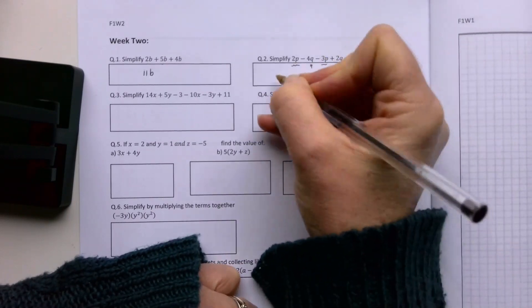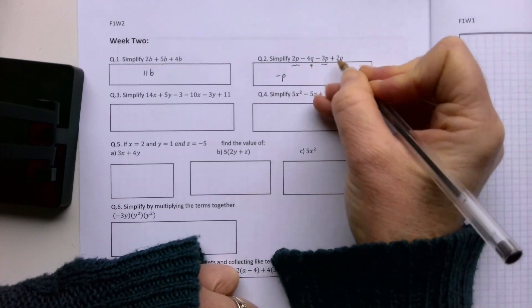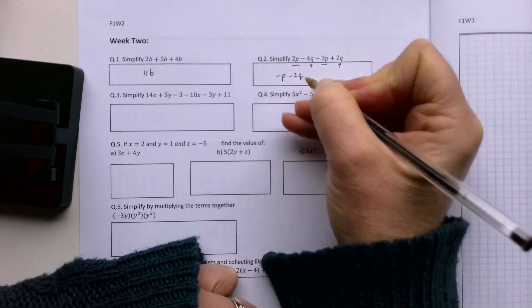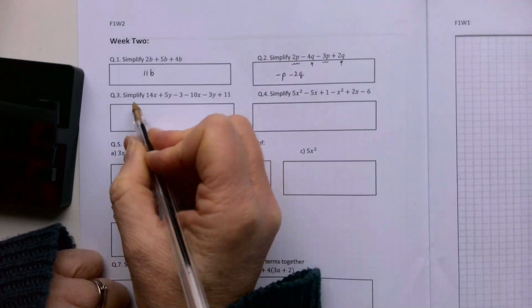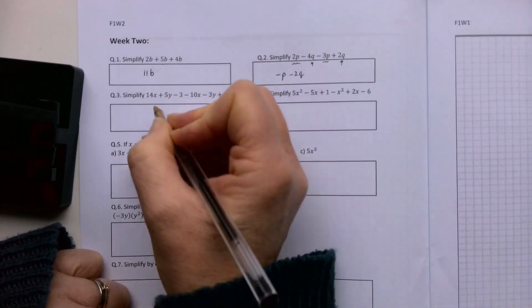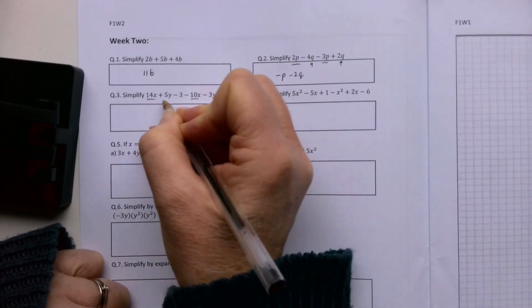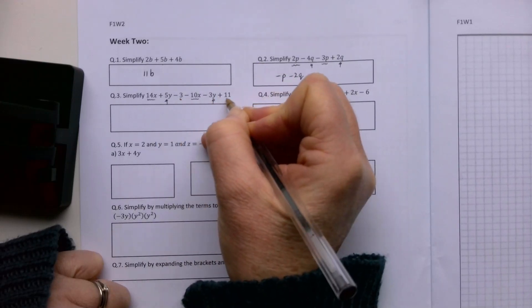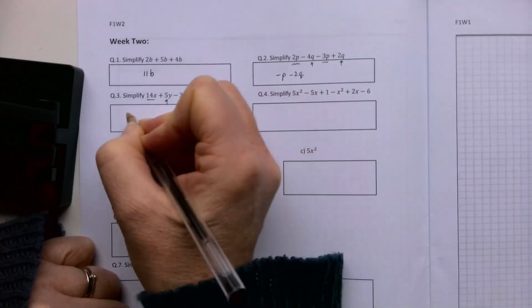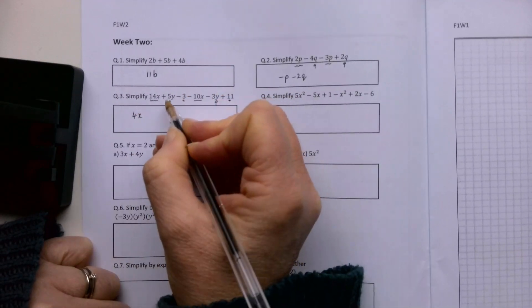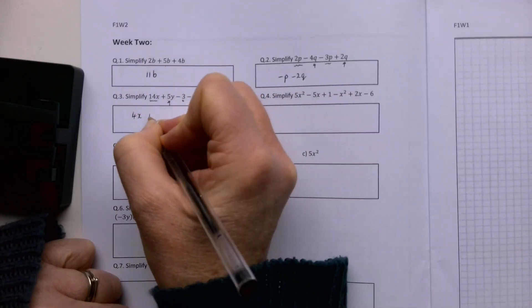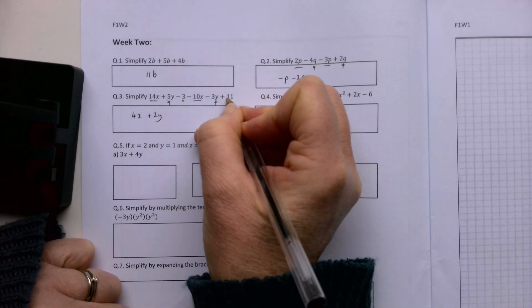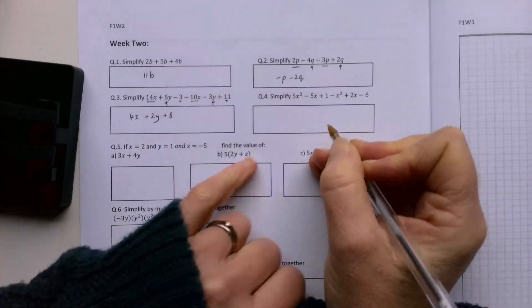Simplify 14x - put together the things that go together. The x's will go together, the y's will go together, and the numbers will go together. So 14x minus 10x is 4x, 5y minus 3y is plus 2y, minus 3 plus 11 is plus 8.